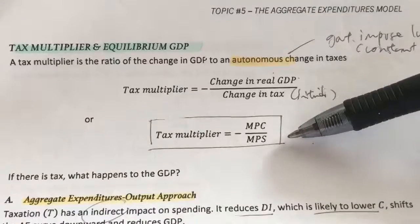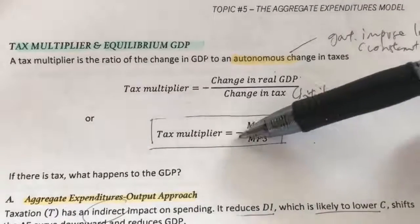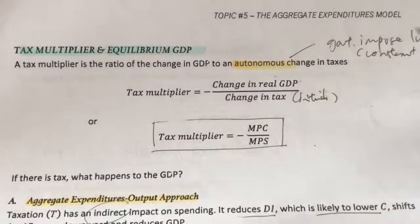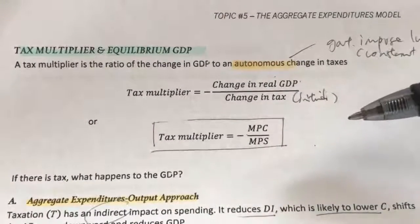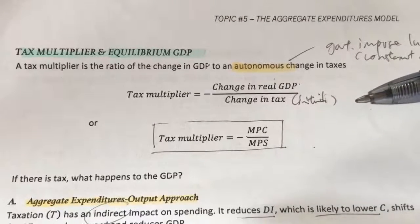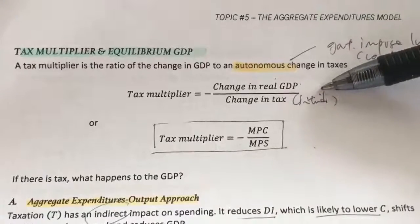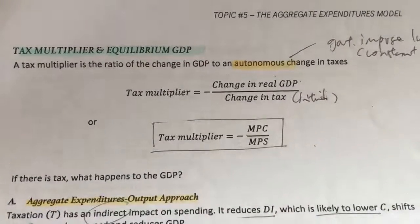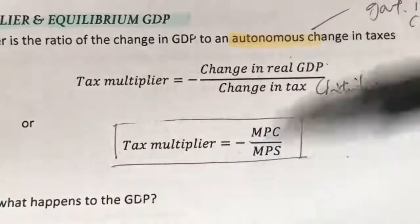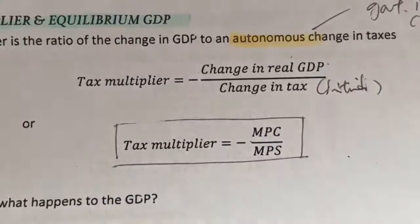This is the alternative formula for the tax multiplier, which is negative MPC over MPS. Familiarize yourself with both formulas because it depends on the information given in the question. Sometimes you are not given the MPC and MPS, so you can use the first formula. But if you are given MPC and MPS and they ask you to calculate the tax multiplier or change in GDP, you can use the second formula.